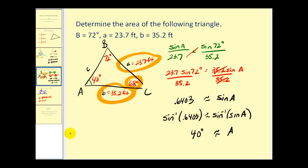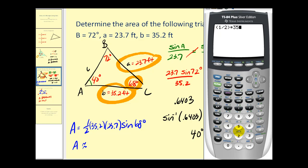The area is equal to one-half times the product of the two sides times the sine of the included angle. So the area is approximately 387 square feet.